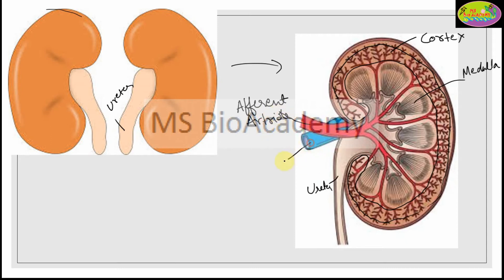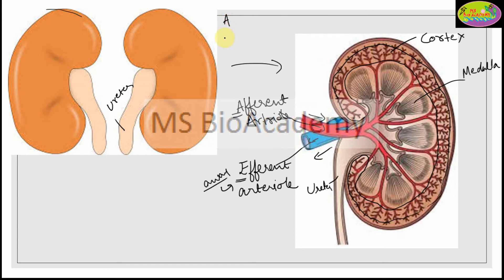The blue vessel coming out is the efferent arteriole. The difference between afferent and efferent: afferent means taking blood towards the organ, efferent means taking it away. A mnemonic: in alphabetical order, A comes before E, and I (in) comes before O (out) — so afferent takes blood inside the organ, and efferent takes it outside.